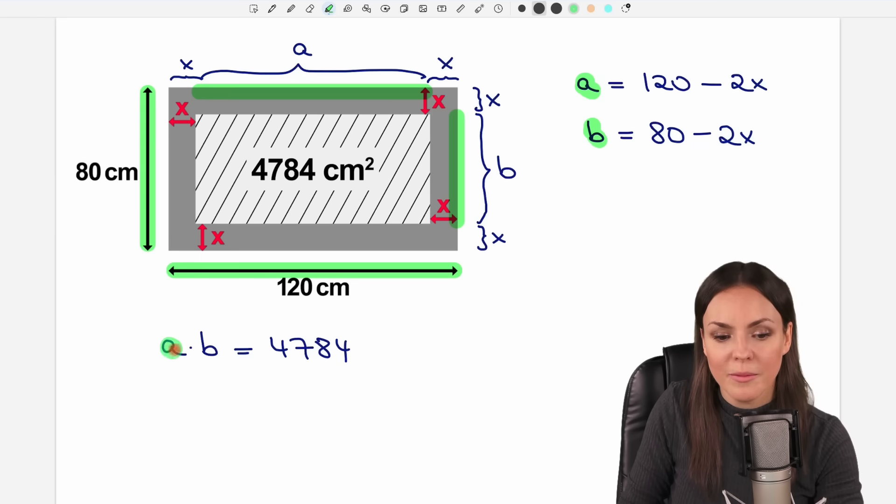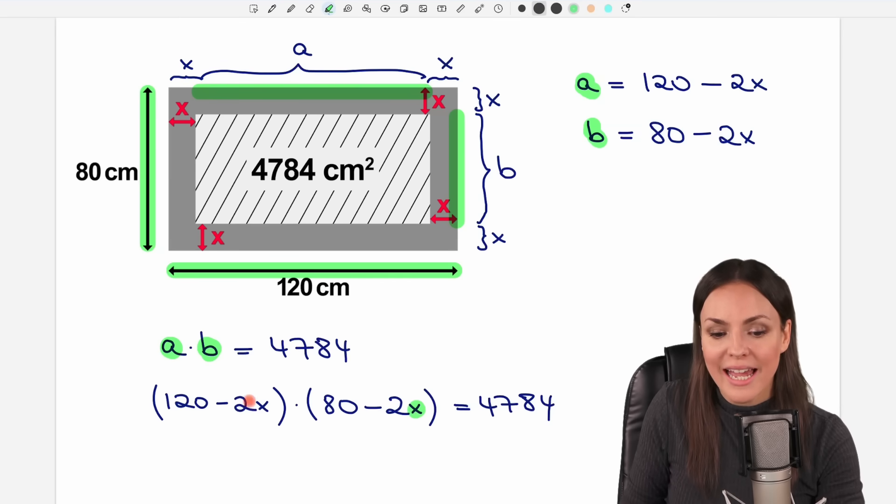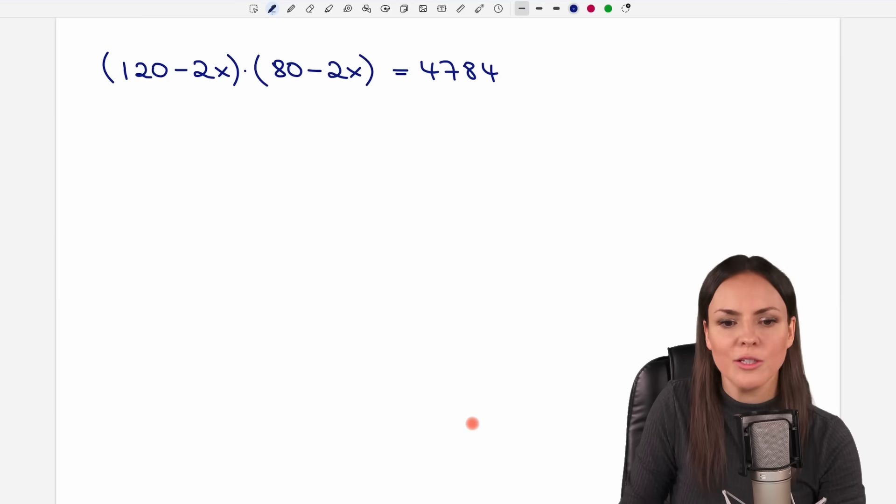So let's put them in here in our equation. For A we write this here. So we write 120 minus 2x. Now we want to multiply this by B so we write it in parentheses and multiply it by our expression for B which we write in parentheses as well. So we put the 80 minus 2x in here for our B and this equals 4784. And now we have an equation. There is only x in here and we can take this equation and solve it for x.